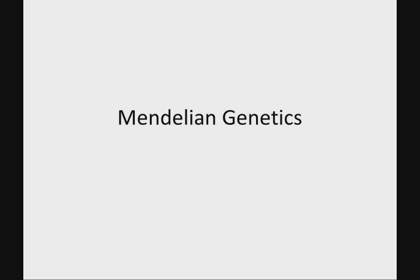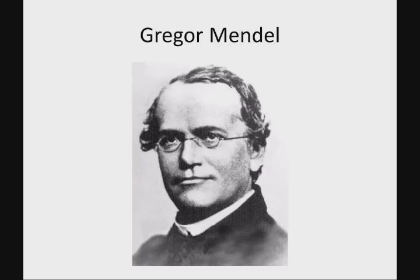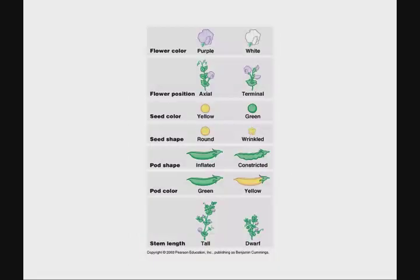Modern genetics was really conceived and founded with Mendel. Gregor Mendel was a monk and he worked with pea plants, and these are many of the examples we'll use as we start to learn about basic genetics. One thing we need to stress is the difference between phenotypes and genotypes. Phenotypes are physical aspects of the genome; the genotype is all the genetic information that you have. What Mendel looked at was differences in phenotype.